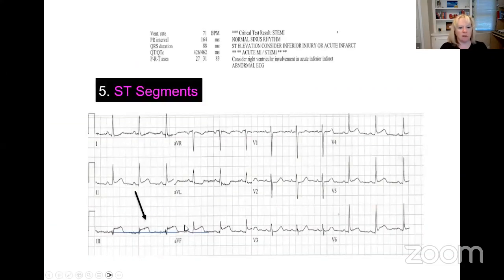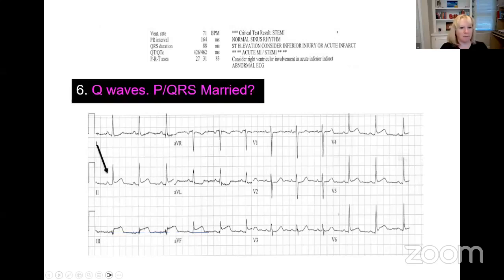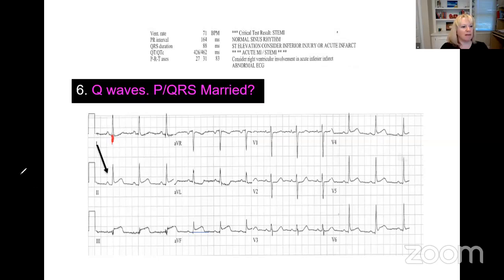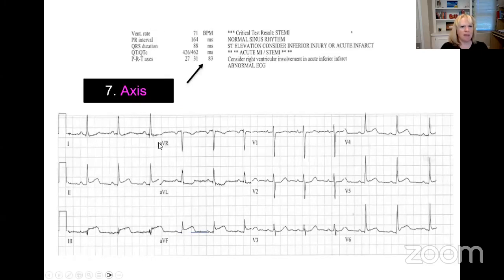Step five is looking at ST segments — we talked a lot about that already. But if it ever says STEMI, you move that to the very top. Step six is looking for Q waves. A Q wave would look like a dagger hanging off the beginning of the QRS complex — a negative deflection. If it's a third of the height of the R wave, it's pathologic. You're also always making sure that your P and your QRS are married, meaning they're staying close together.